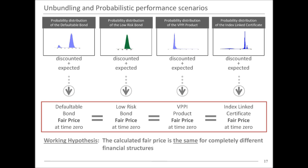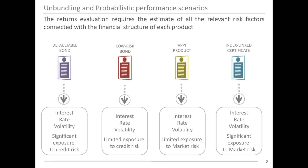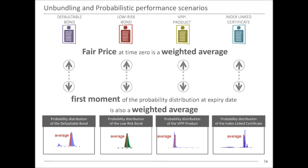Here is a small provocation: if these four products were engineered to have the same fair value — different probability distributions but the same discounted weighted average — how would you take an informed decision just by knowing the product names, the sources of risk, and the price? It's like a blind man trying to find the key to his apartment. The price alone is not the piece of information that allows you to navigate the complex world of investment decisions.